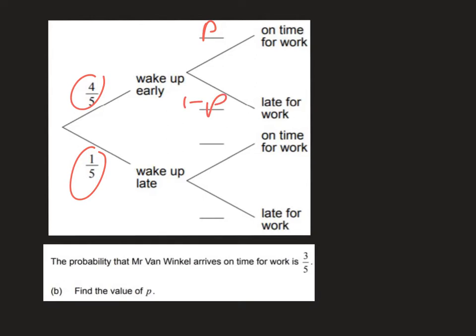We are then told that if he wakes up late, the probability that he is on time for work is a quarter, and therefore again similarly, the probability that he is late for work must be three-quarters, so those add up to 1. So that's part A.